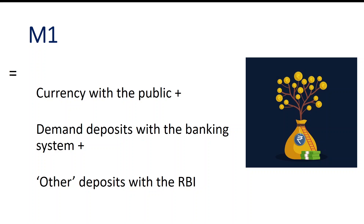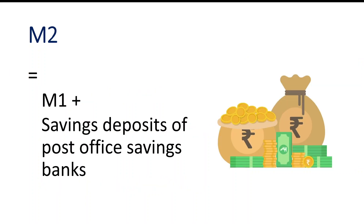Currency with the public means the hard cash we all possess. Demand deposits are basically all saving accounts. Other deposits with the Reserve Bank — that is M1. Then we have a second measure of money supply, M2, which includes M1 plus savings deposits of post office saving banks.